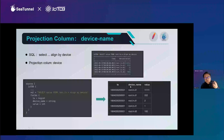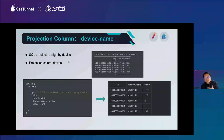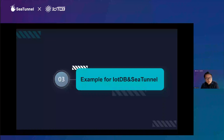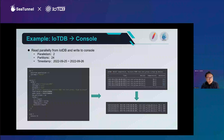We also support the projection column for device name. If you use 'SELECT align by device' in IoTDB, there will be a projection column called device name in the result. When you load data from IoTDB to MySQL or other databases, you will have a column called device name mapping to the IoTDB device. This is the projection column for device name. There are also other features you can read about in the documentation online.